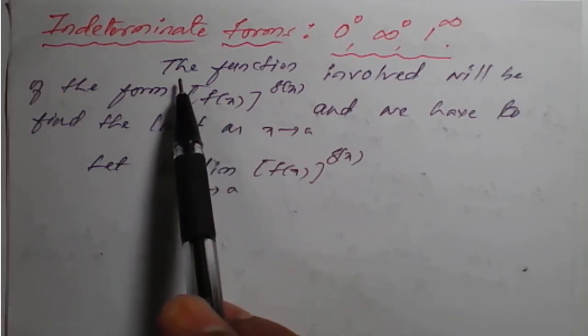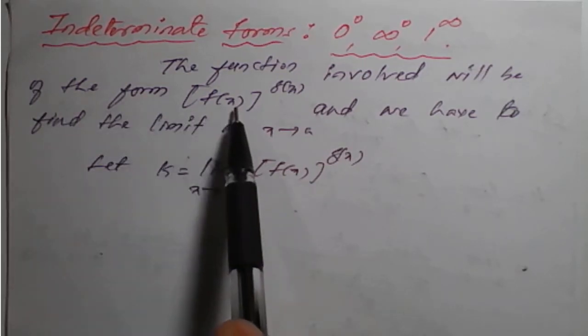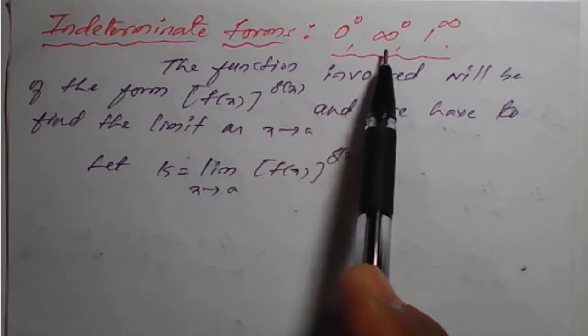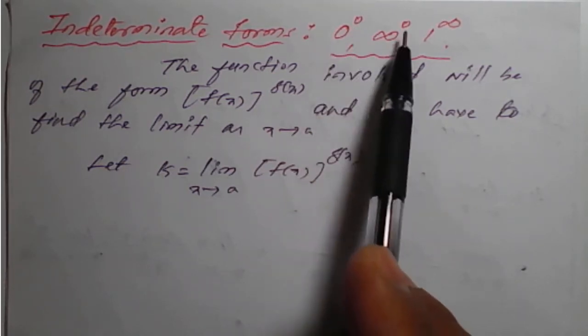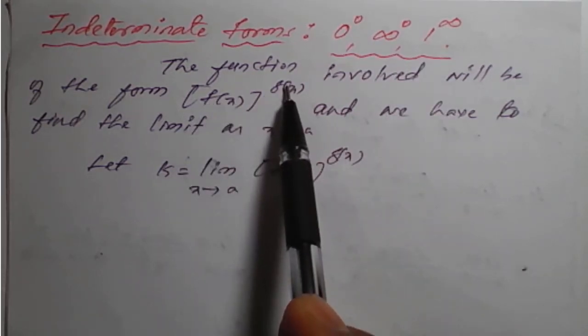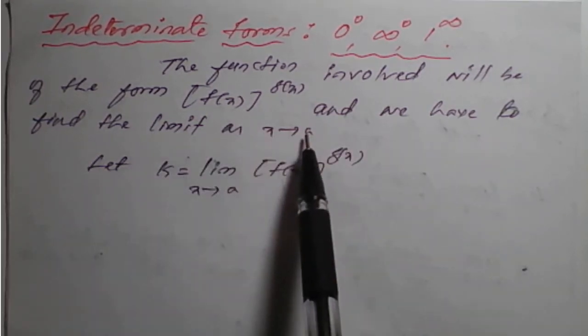The function involved will be of the form f(x) raise to g(x). Whatever forms we have - 0 raise to infinity, 0 raise to 0, infinity raise to 0, and 1 raise to infinity - of the form f(x) raise to g(x), we have to find the limit as x tends to a.